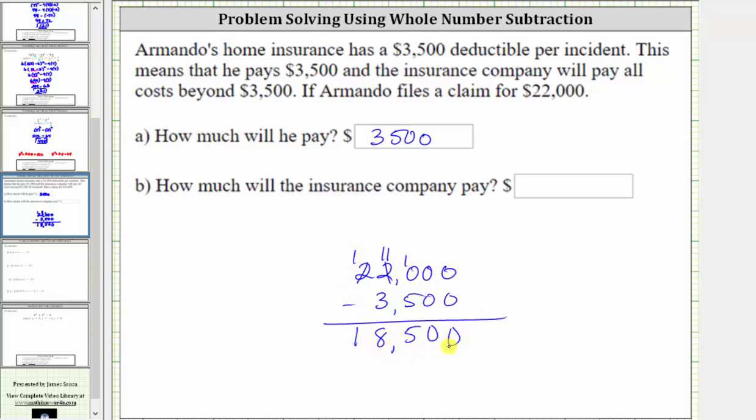The difference is 18,500, and therefore the insurance company will pay $18,500 of the $22,000 claim. I hope you found this helpful.